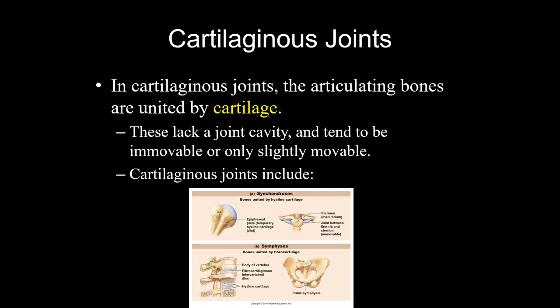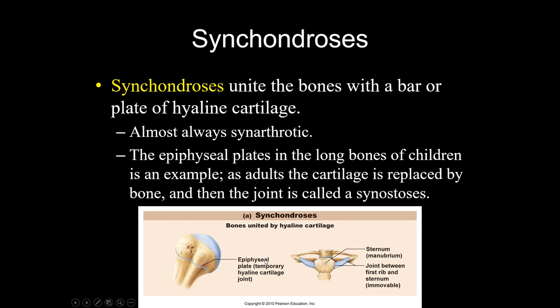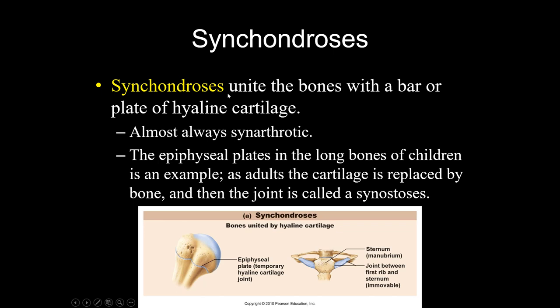After that you have cartilaginous joints — there are two kinds. A synchondrosis is when hyaline cartilage connects two bones together, like between the ribs and the sternum. These usually don't move so they're synarthrotic. A symphysis is when fibrocartilage connects bones together. Your intervertebral discs and pubic symphysis are examples of symphyses. These can allow a lot or a little movement depending on the anatomy of the joint.